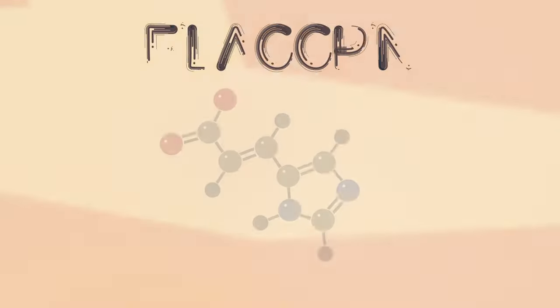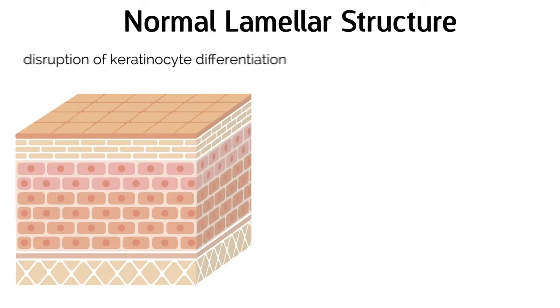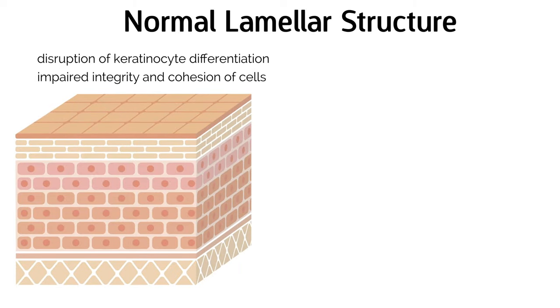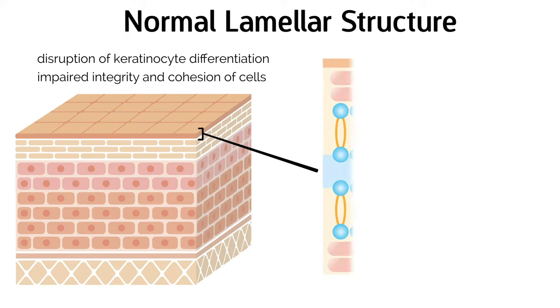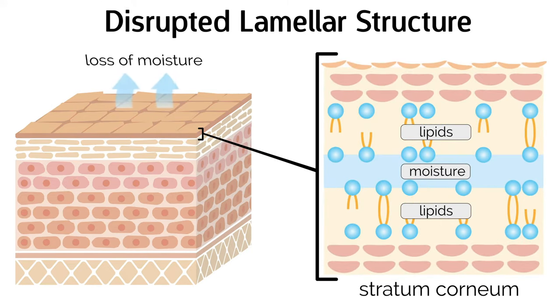Key to the integrity of the skin barrier and the ability of the skin to prevent water loss is the protein filagrin. A defect in the filagrin protein can result in disruption of the keratinocyte differentiation and impaired integrity and cohesion of cells in the stratum corneum. This results in a permeable skin barrier and decreased water retention. Filagrin mutations affect the formation of lipids needed for maintaining skin pH and natural lubrication.